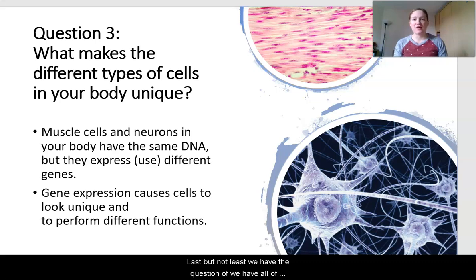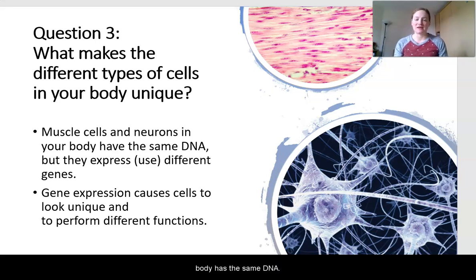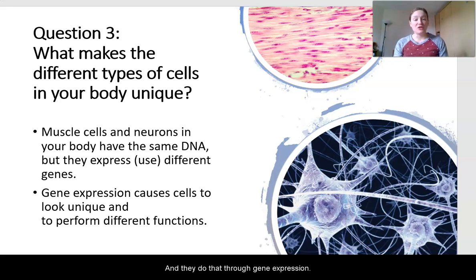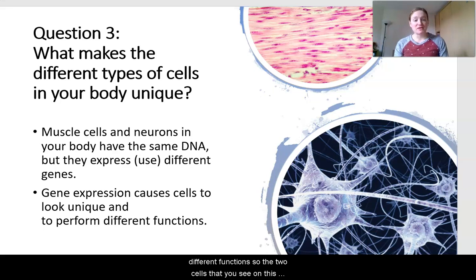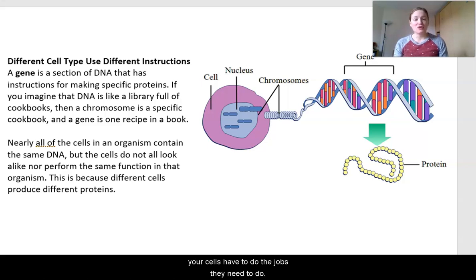We have all of these new cells, and all of these new cells have all of the DNA. But how are these cells unique from each other, and how do we have different types of cells in our body? Muscle cells and neurons in your body all have the same DNA — every single cell in your body has the same DNA — but they use different parts of that DNA to do the jobs they are designed to do. They do that through gene expression, which causes cells to look unique and perform different functions. Different cell types use different parts of the chromosomes to do the jobs they need to do.